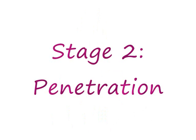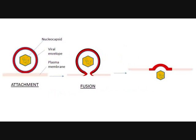Stage 2: Penetration. There are two general mechanisms that viruses use for penetration. The first method is the direct fusion of the viral envelope with the cytoplasmic membrane of a host cell. The virus leaves its envelope behind, merging it with the host cell surface membrane, delivering the viral capsid into the cytoplasm of the host cell.